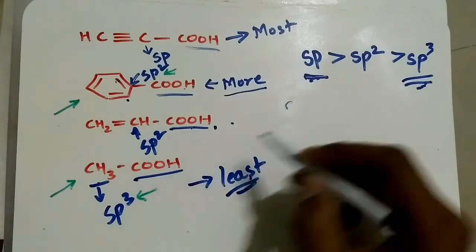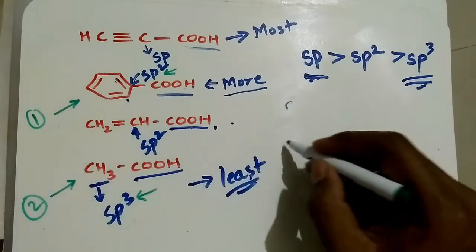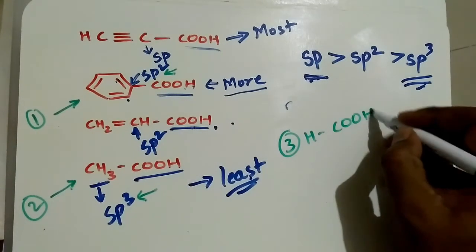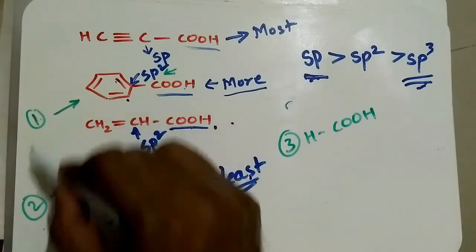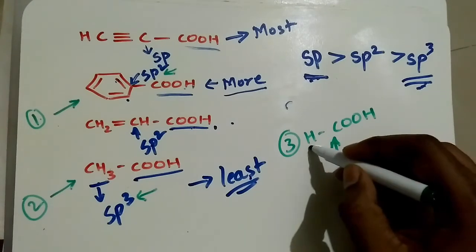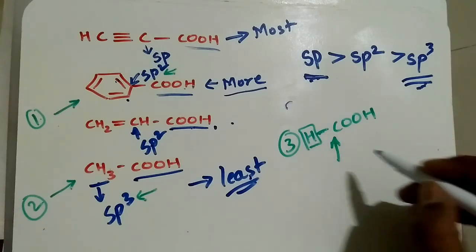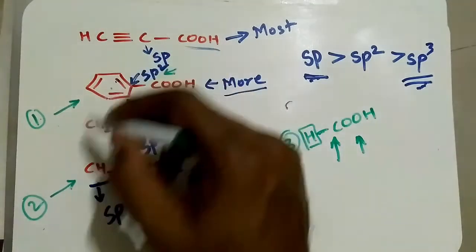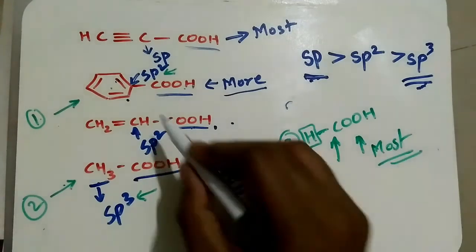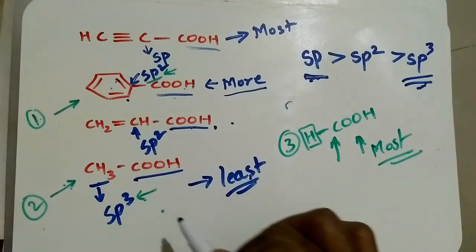Comparing formic acid (no hybridized carbon attached), benzoic acid (attached to SP2 aromatic carbon), and acetic acid (attached to SP3 carbon): formic acid is the most acidic since it is not attached to any hybridized carbon. Benzoic acid is next, followed by acetic acid as the least acidic.